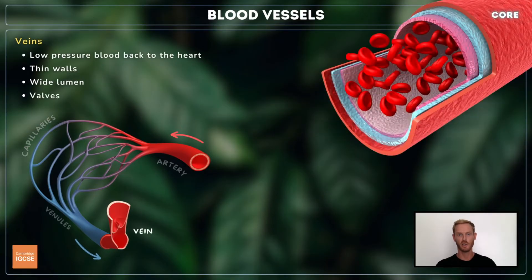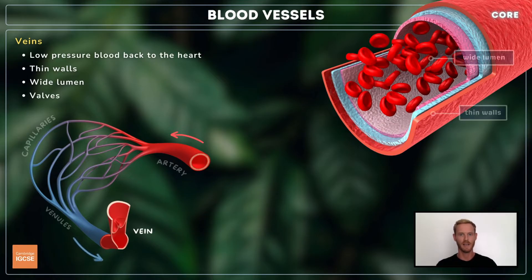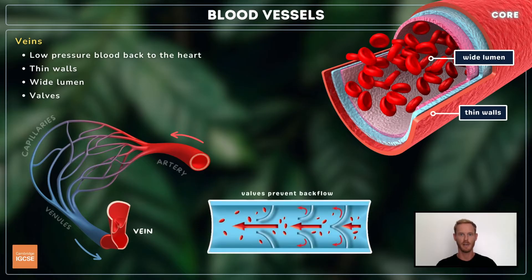Capillaries merge into venules, and then the venules lead into veins, which transport blood back to the heart. Veins have thinner walls and a wider lumen than arteries. They also contain pocket valves to prevent the backflow of low pressure blood.